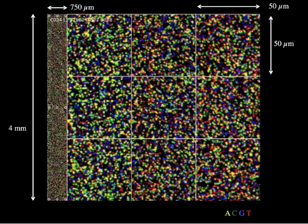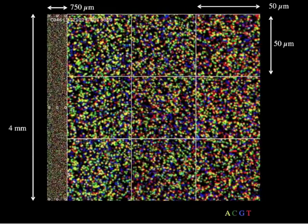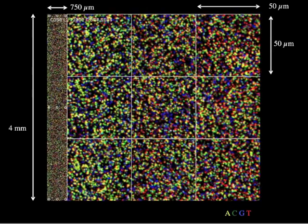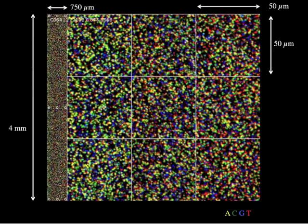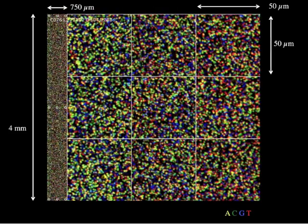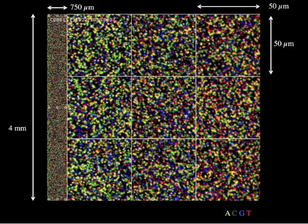After taking a picture of the colored spots, the Illumina machine removes the dyes and adds one more colored base to the growing chain. It then takes another picture. Since the colors of the spots are determined by the type of base last added, the sequence of adjacent bases in the original input molecules can be determined.